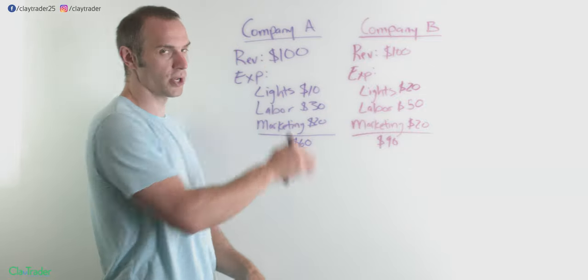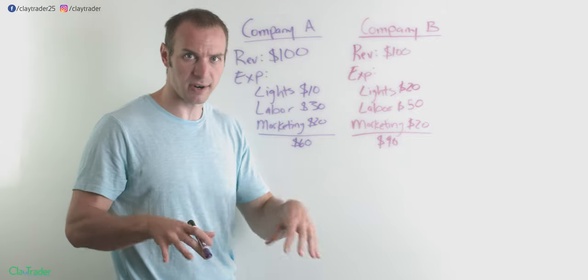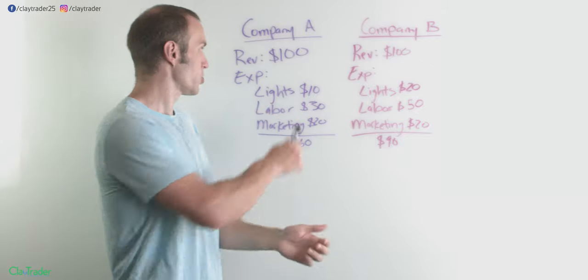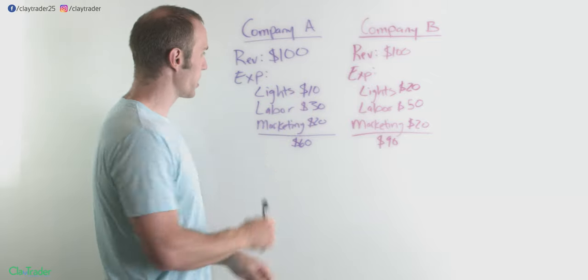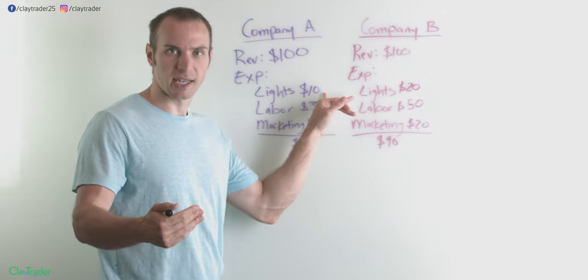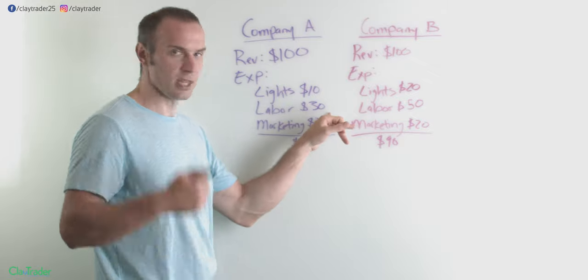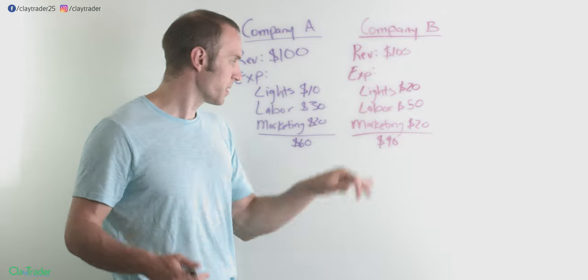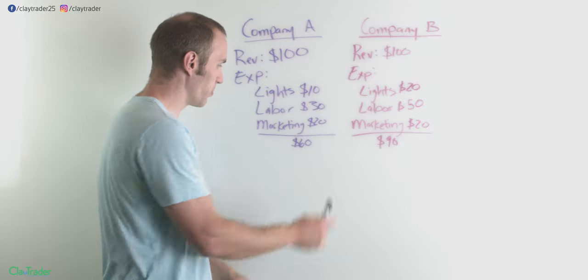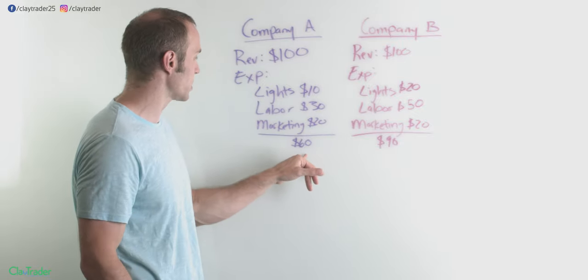So company A, revenue of $100, just keeping the numbers very simplistic. So they do $100 in revenue. Expenses right here, you can see. So just to keep the lights on, $10, labor, so you gotta hire people, $30. And then marketing, $20. You add these up, which gives you the total expense of $60.